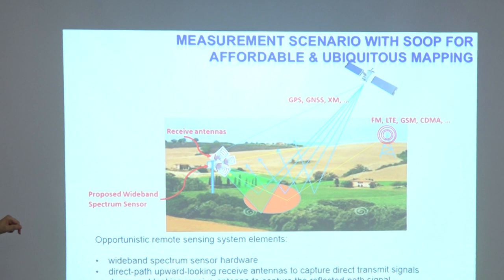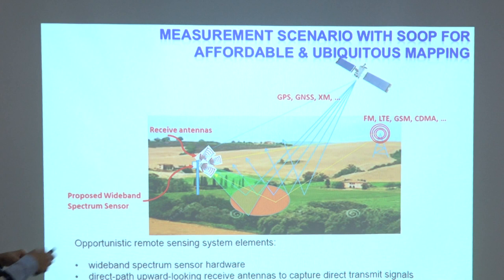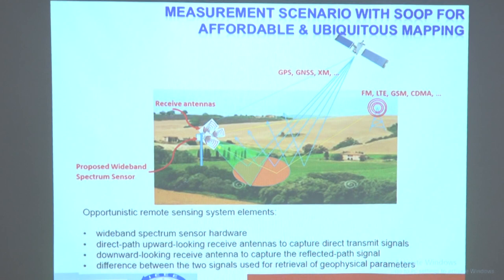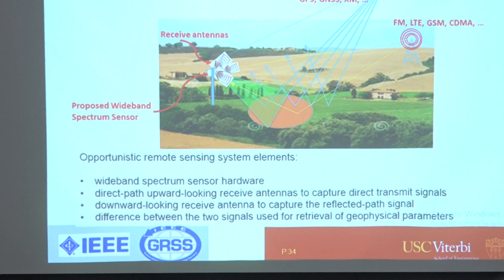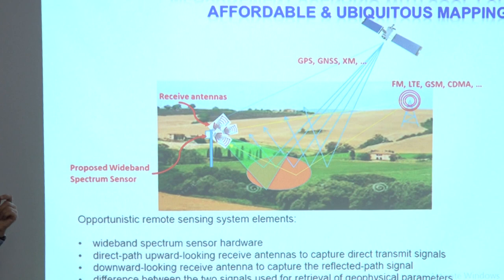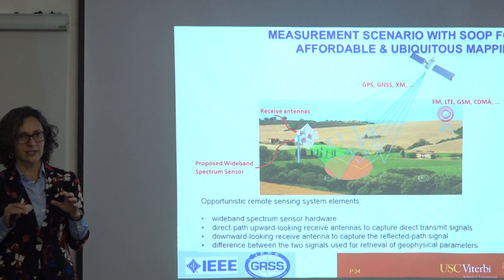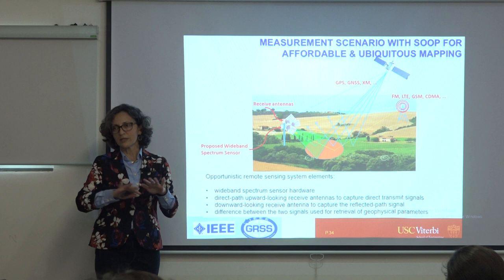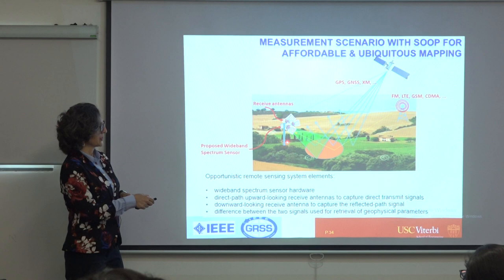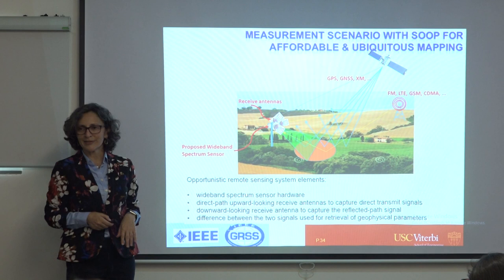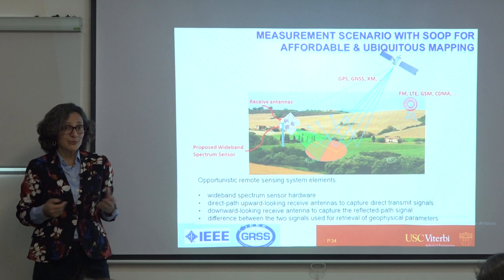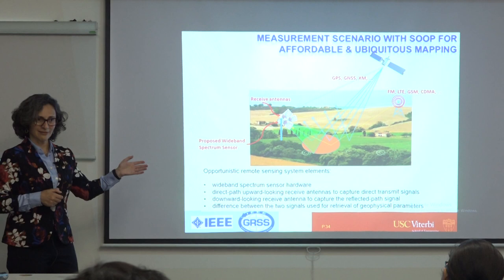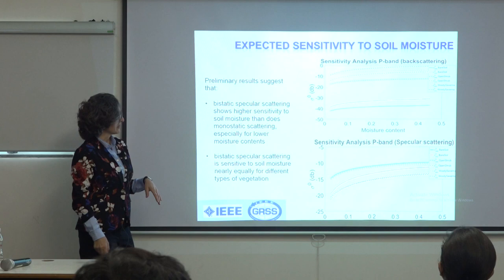Beyond expensive dedicated radar missions, we need sensors that are more ubiquitous, accessible, and less expensive — allowing continuous, pervasive measurement of soil moisture and groundwater. Signals of opportunity are promising here: if everyone with a receiver recorded GPS reflections and contributed to a uniform database, we would have a global dataset without much effort. This is something we should be striving for long-term.